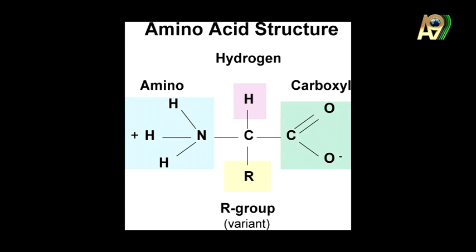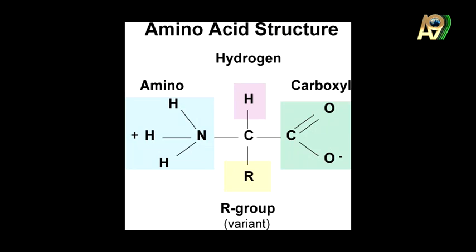Now I want to show you a picture of an amino acid. When you look at the structure, you see something in the middle — the carbon atom, called the alpha carbon. Then you see the carboxyl group, amino group, hydrogen, and the variant group. This is the basic structure of an amino acid. There are two bonds here: one between the carboxyl group and the alpha carbon, and the other between the amino group and the alpha carbon. These bonds make the amino acid have a flexible shape.